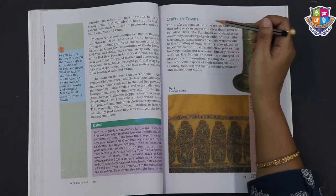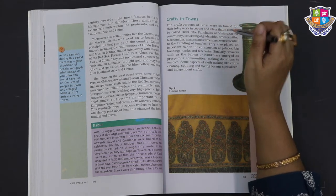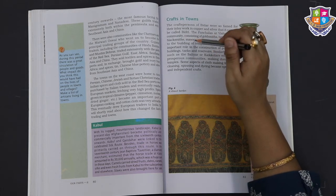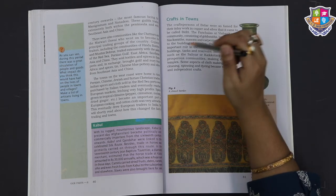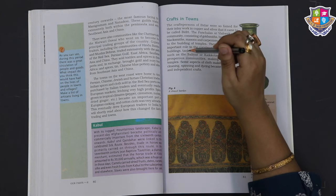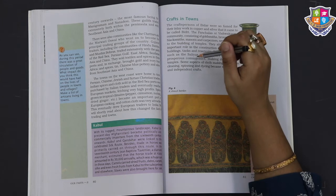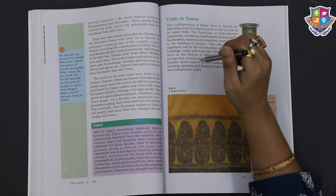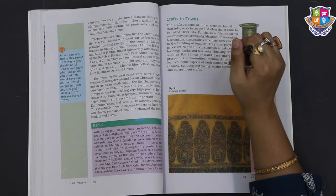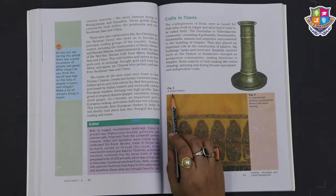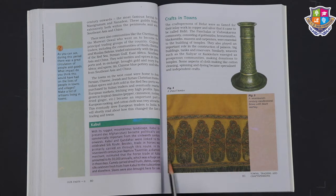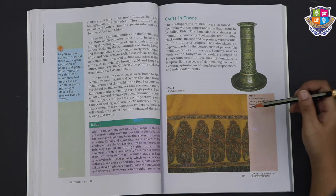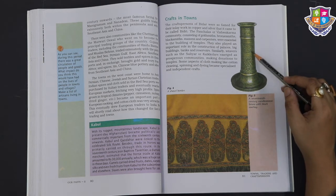Crafts in towns. The craftspersons of Bidar were so famed for their inlay work in copper and silver that it came to be called Bidri. The Panchala or Vishwakarma community, consisting of goldsmiths, bronze smiths, blacksmiths, masons and carpenters, were essential to the building of temples. They also played an important role in the construction of palaces, big buildings, tanks and reservoirs. Similarly, weavers such as the Saliyar or Kaikkollar emerged as prosperous communities, making donations to temples. Some aspects of cloth making like cotton cleaning, spinning and dyeing became specialized and independent crafts. See figure four, a shawl border. How beautifully it is made. In figure five, a 17th century candle stand, brass with black overlay.